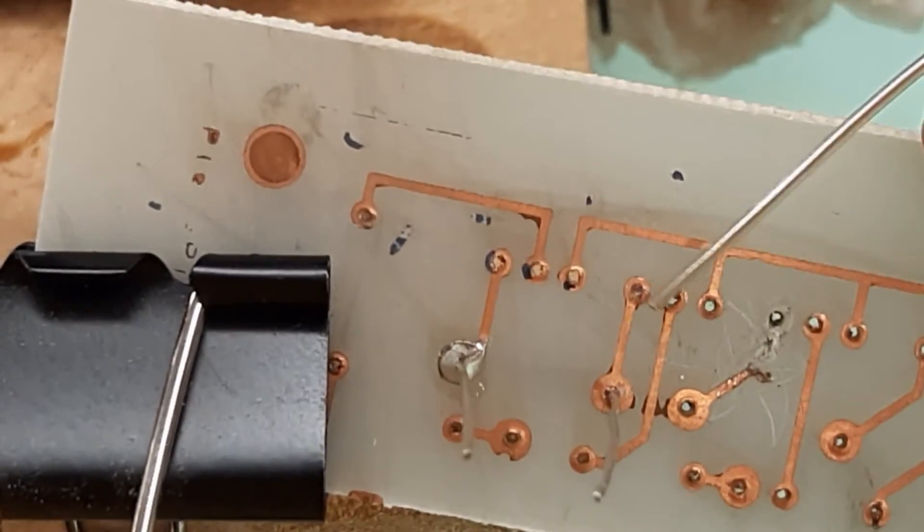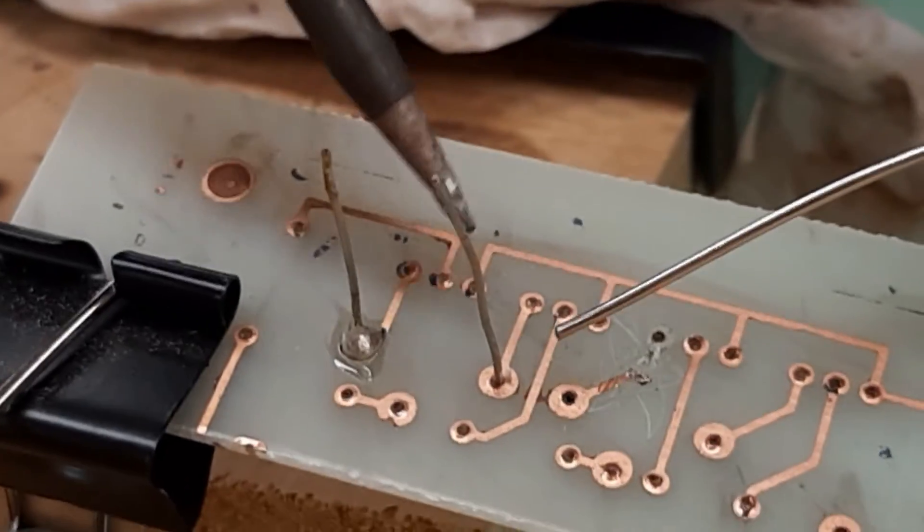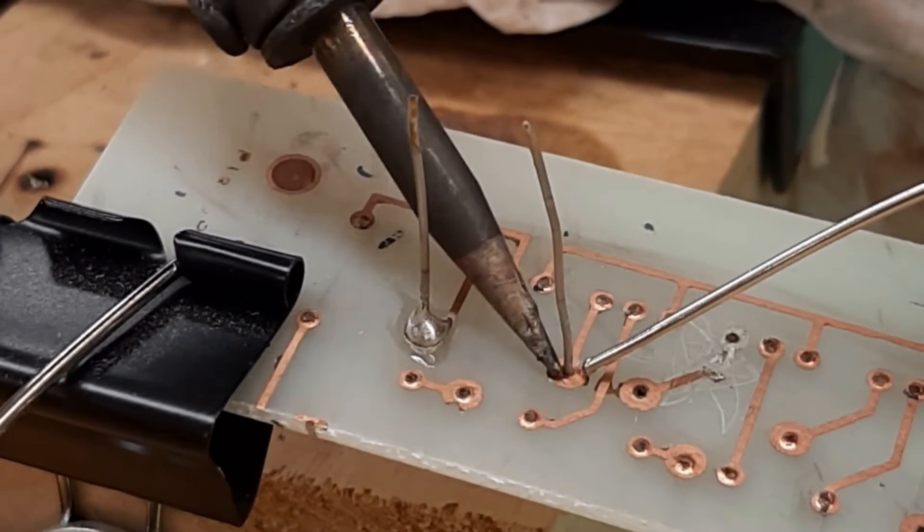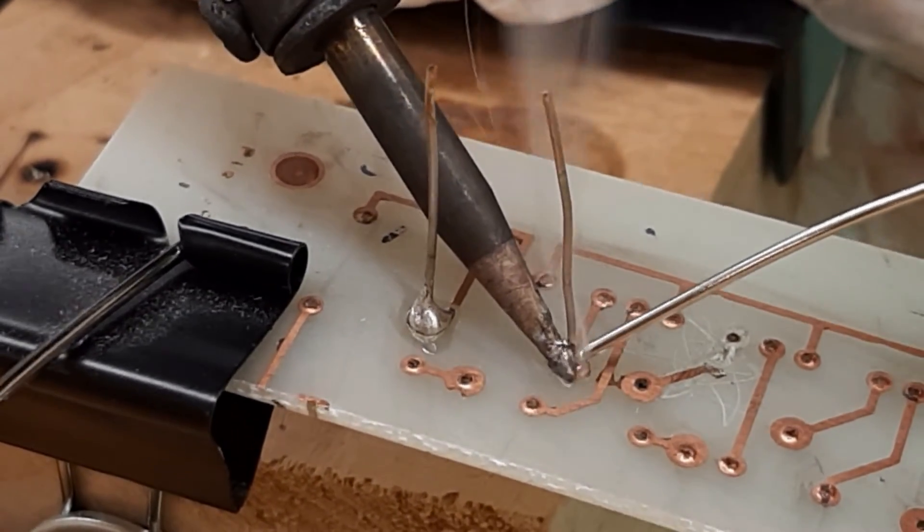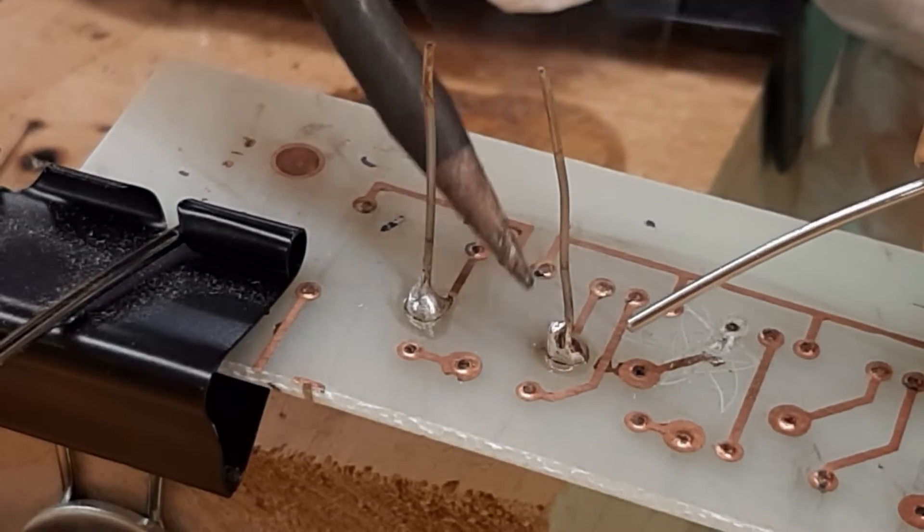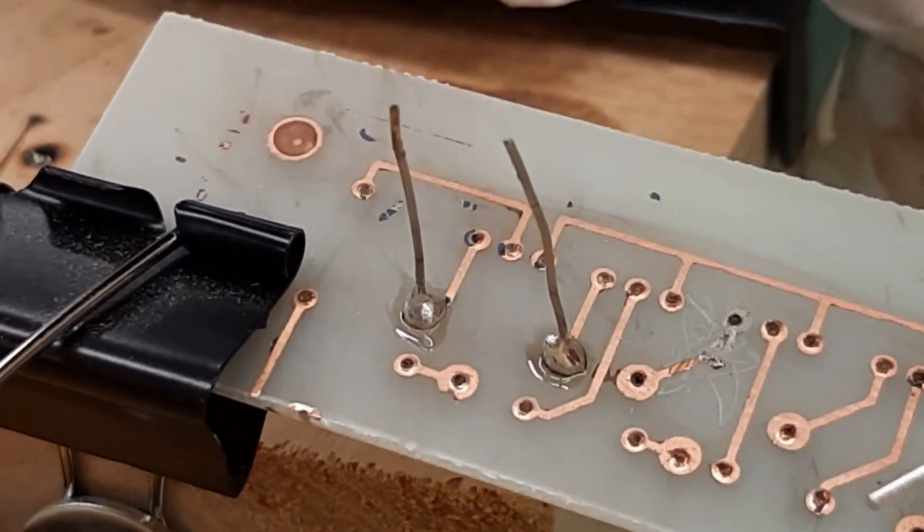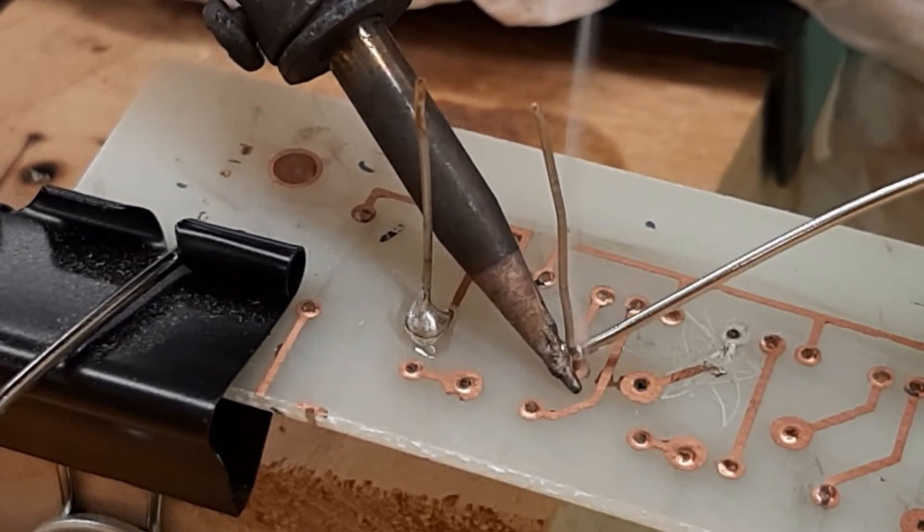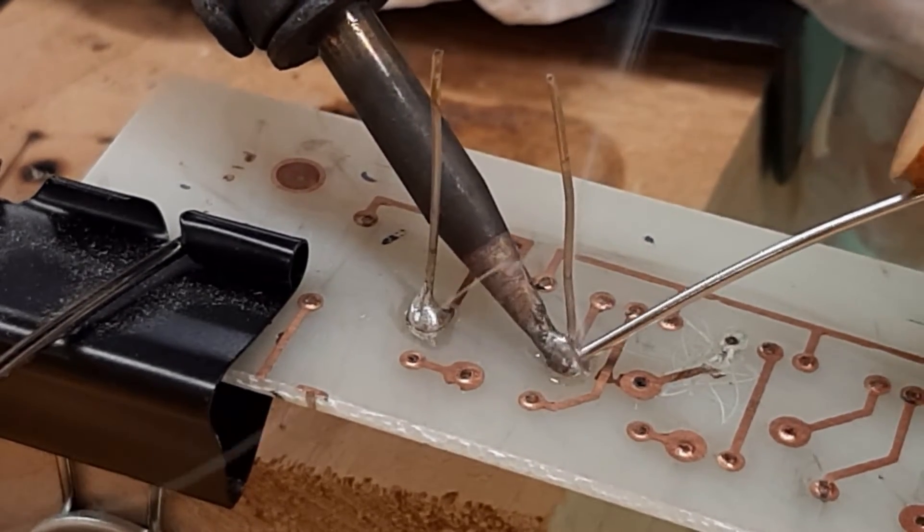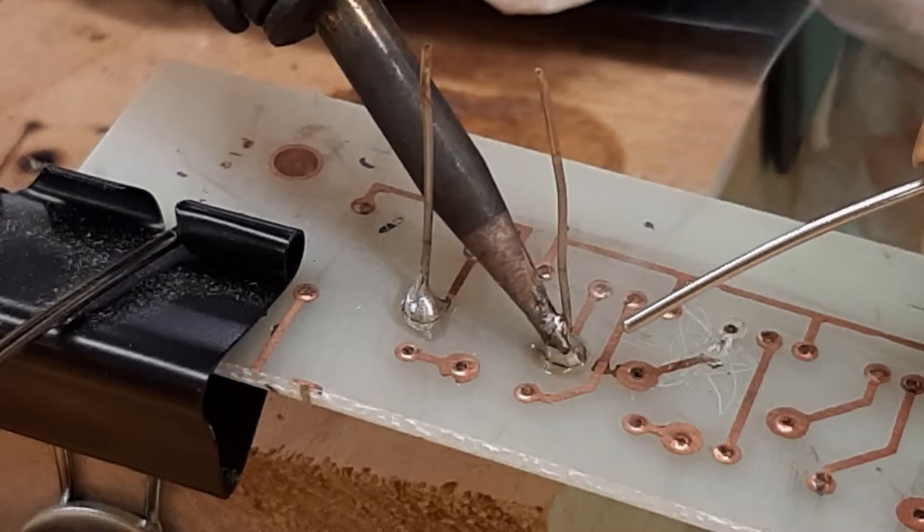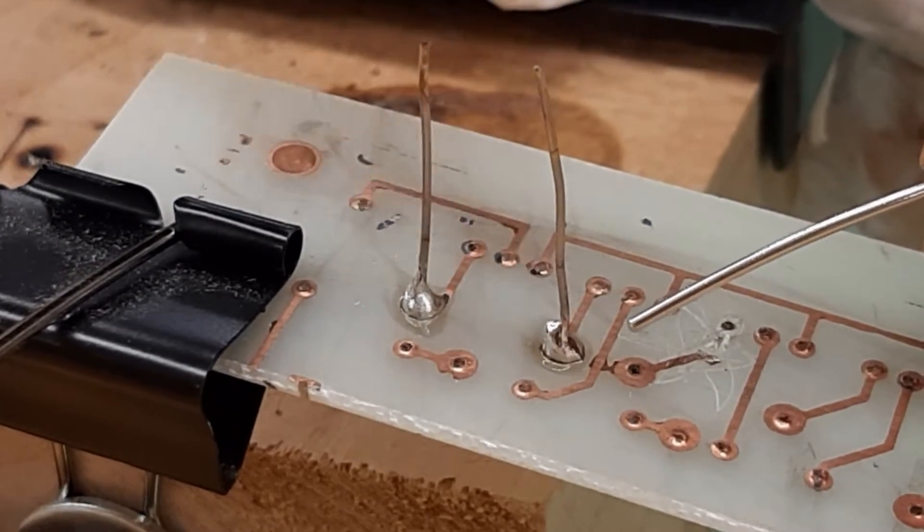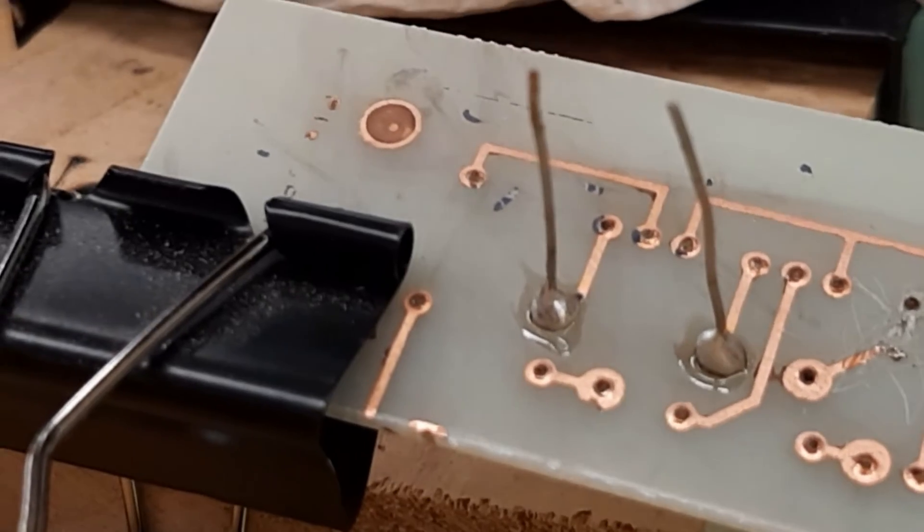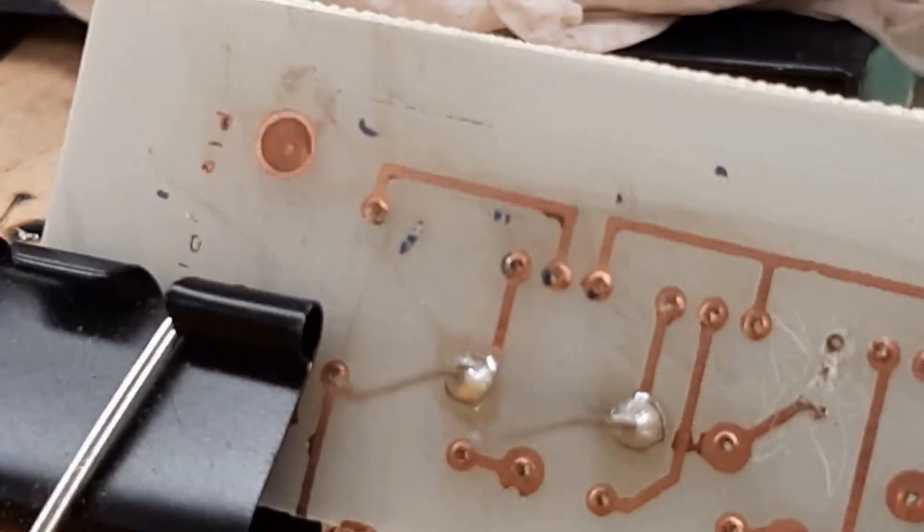So I'll show you that again. Tin it a little bit. Apply some heat. Apply some solder. Push the solder in, and then get out. So I'll show you that again. Let it cool off. And it should look like a tiny volcano.